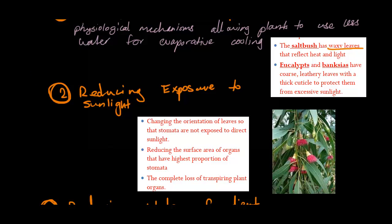The second one is reducing exposure to sunlight. Now this quite often occurs in arid and desert environments, and is a very common adaptation by plants in order to actually maintain a balance of water inside their systems. Now the changing orientation of leaves so that the stomata are not exposed to direct sunlight. So just as seen here, how the leaves are now faced downwards in order to not actually get exposed to sunlight, and therefore have reduced the internal temperatures while reducing exposure to sunlight. Reducing the surface area of organs that have the highest proportion of stomata, and the complete loss of transferring plant organs. So what I've really gone through here is that by reducing the exposure to sunlight, they are also reducing the amount of water expenditure, as well as reducing the internal temperatures.